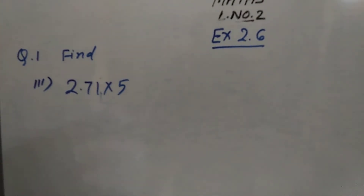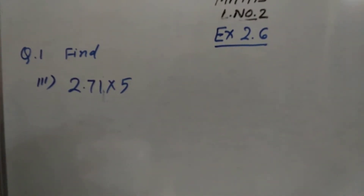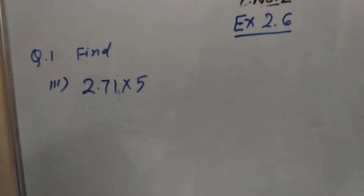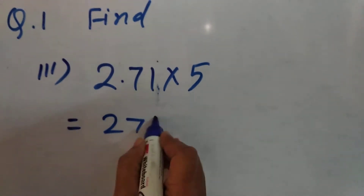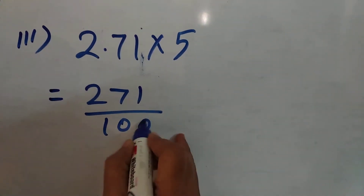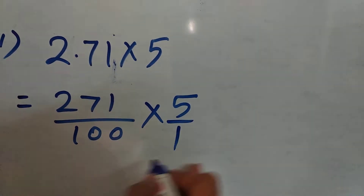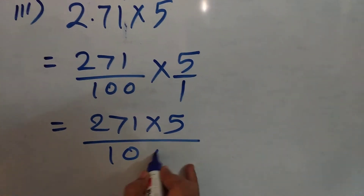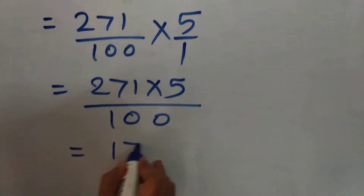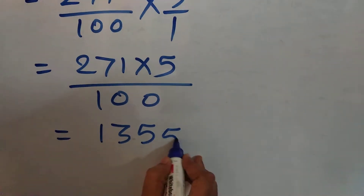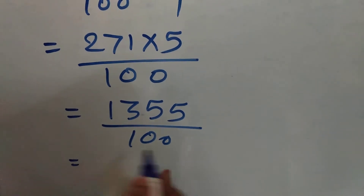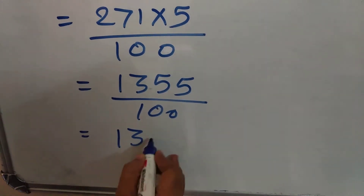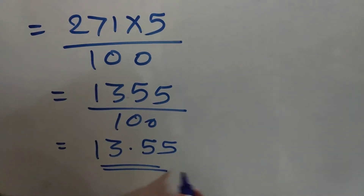Question number 1: 2.71 multiplied by 5. Convert this into a fraction and then carry out the multiplication. The multiplication gives 1355 upon 100. Converting back to decimal, 13.55 is the answer.